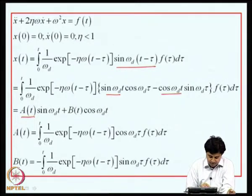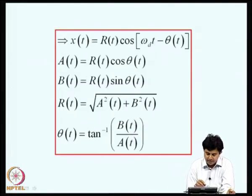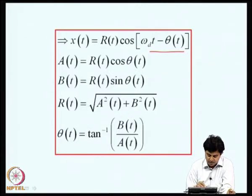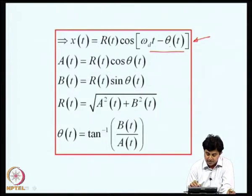A(t) is the integral from 0 to t of (1/omega_d) * e^(-zeta*omega*tau) * cos(omega_d*tau) * F(tau) d-tau, and similarly for B(t). From this expression, we can write X(t) = R(t) * cos(omega_d*t - theta(t)), where A(t) = R(t)*cos(theta(t)) and B(t) = R(t)*sin(theta(t)), giving R = sqrt(A^2 + B^2) and theta = arctan(B/A). So even in this case, we can write the response in terms of an envelope R(t) and a phase theta(t). These representations are quite useful in characterizing dynamic response, and the question naturally arises: how to use such descriptions in characterizing random processes.